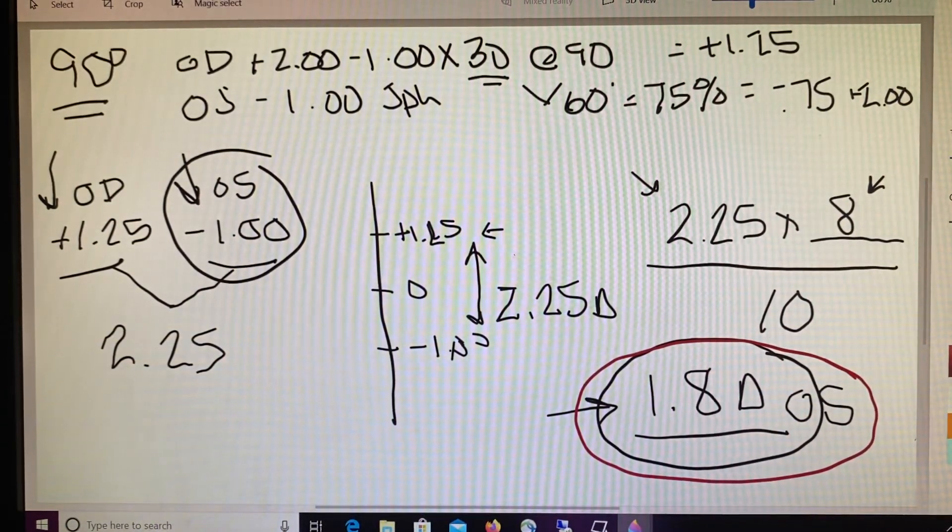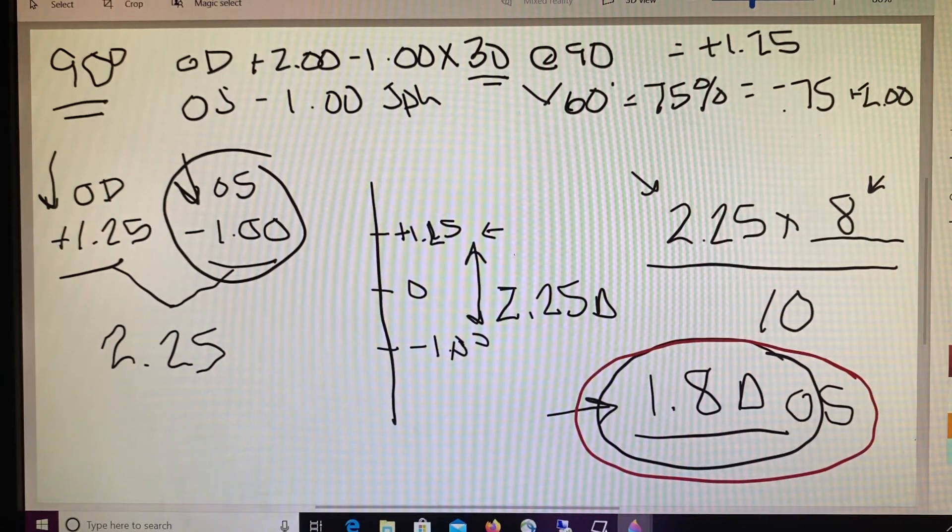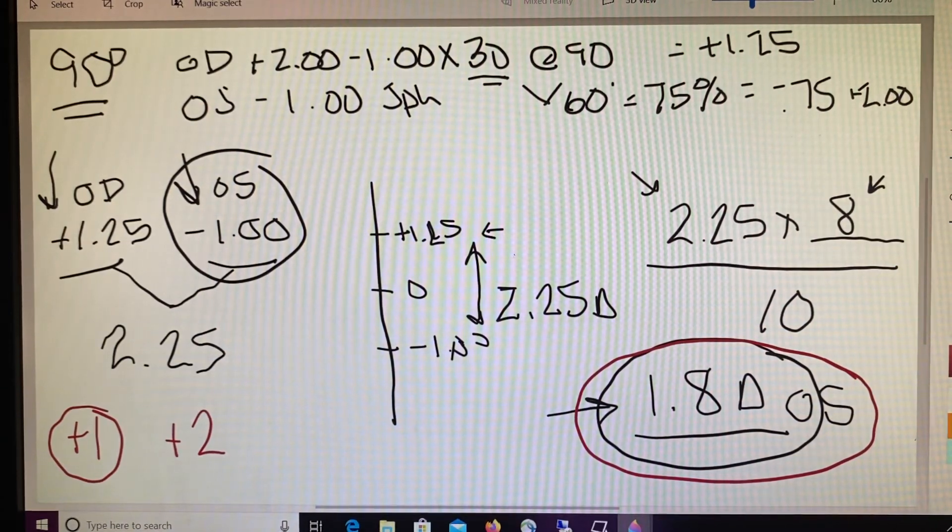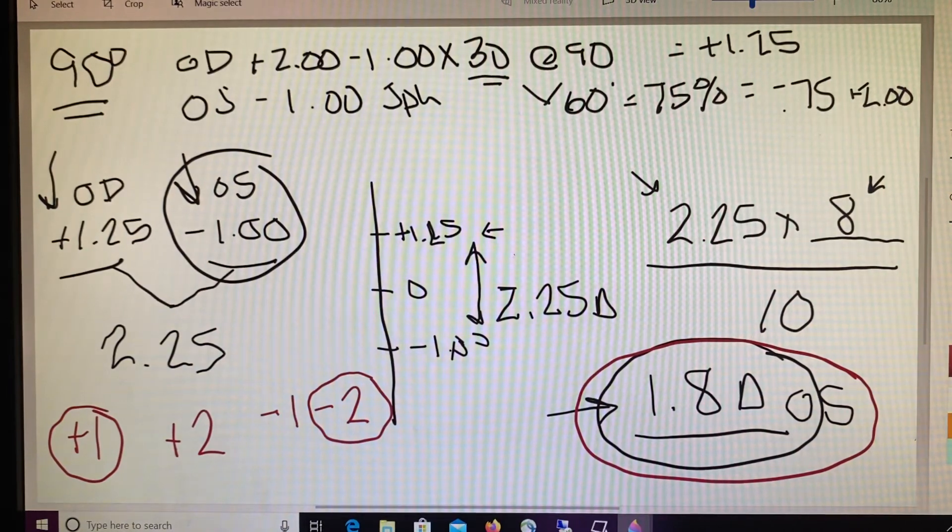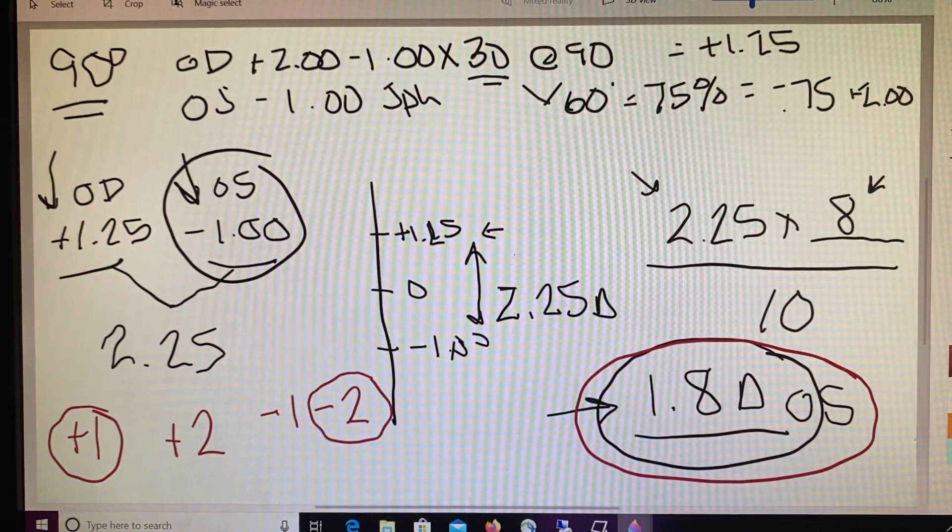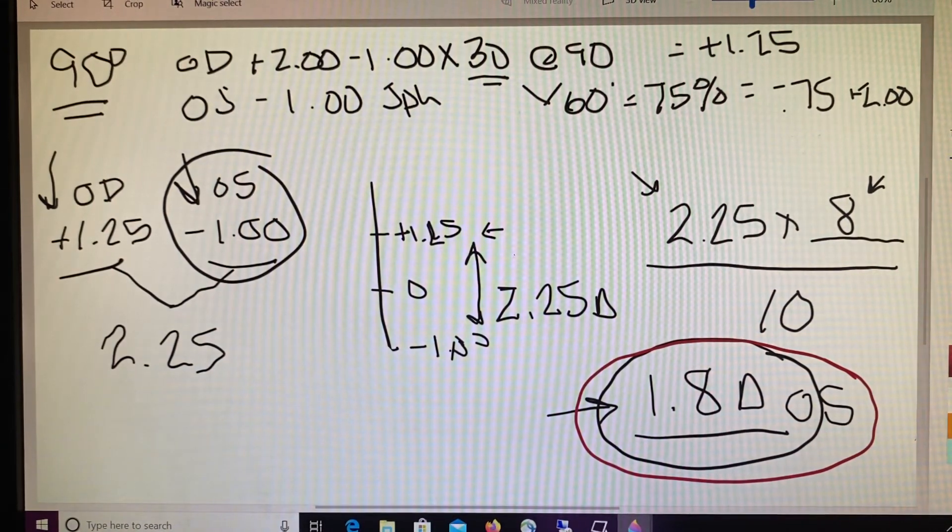So again, least plus, most minus. If I had a plus 1 and a plus 2, we would actually put it in the plus 1 because it's the least plus. If I had a minus 1 and a minus 2, we would say that it goes in the most minus. So it would actually go in the minus 2. We will do another one of these here in just a second just to get some extra practice in because this is a new deal. So again, this vertical imbalance for our patient warrants 1.8 diopters of slab off in our patient's left eye.